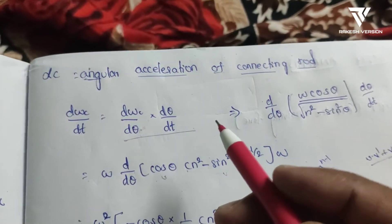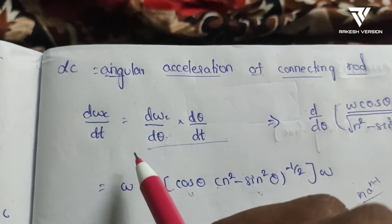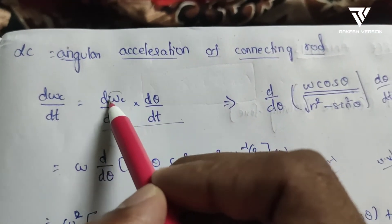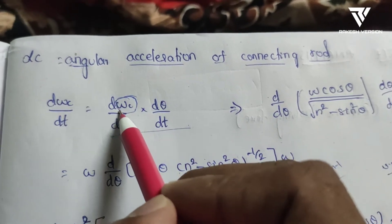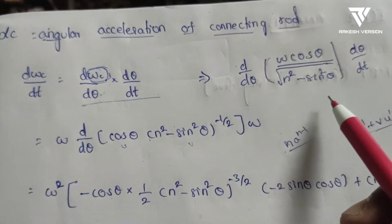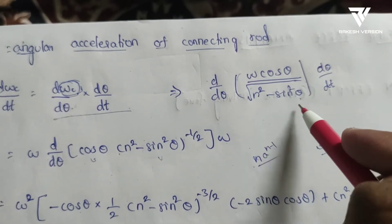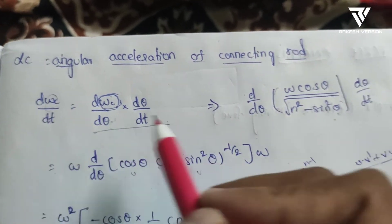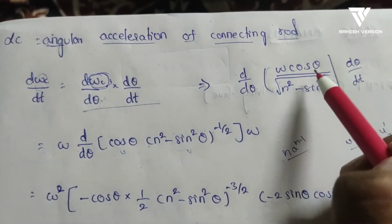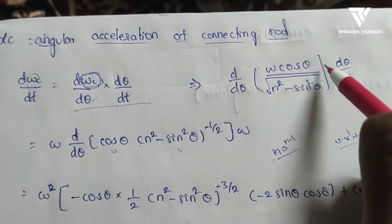Next we find the angular acceleration of the connecting rod by differentiating the angular velocity with respect to time. We substitute ω_c = (ω·cos θ) / √(n² − sin²θ) and differentiate this expression, writing the denominator as (n² − sin²θ)^(1/2).